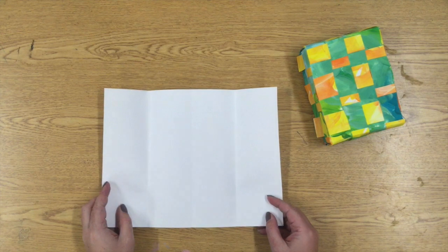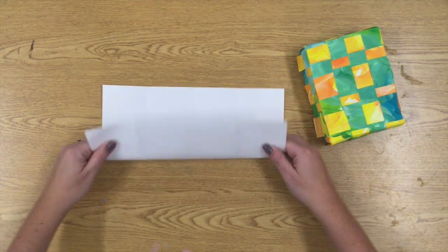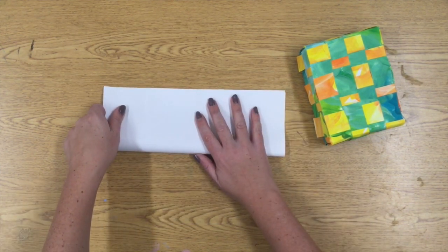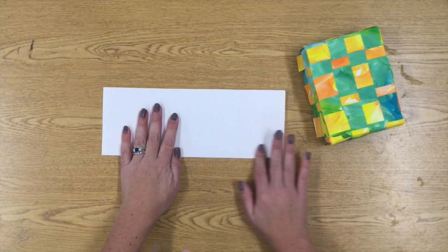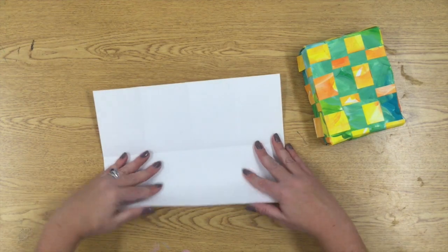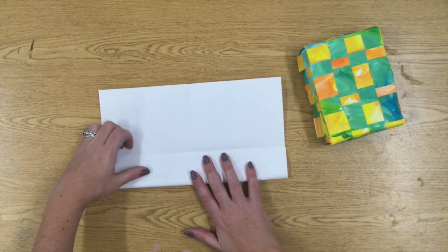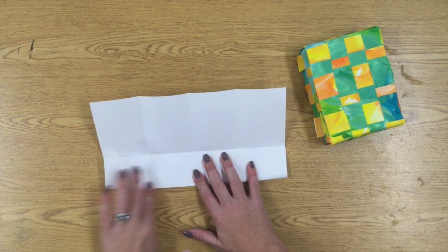All right, once you've got that, you're going to open it up and fold it hot dog style. So fold it in half again. Line up those corners. Do a really good job of creasing that fold and then open it up and you're going to make those double doors again. This time they're going to be really long and skinny.